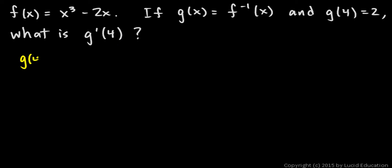Okay, g of 4 is equal to 2. We're told that. So that means that f of 2 has to equal 4. Those are inverse functions, so we can just interchange the x and y values.